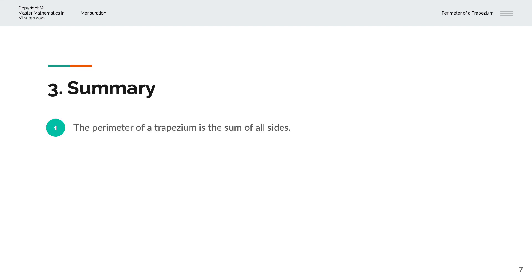To summarize, the perimeter of a trapezium is the sum of all sides. And that is given by P is equal to A plus B plus C plus D.